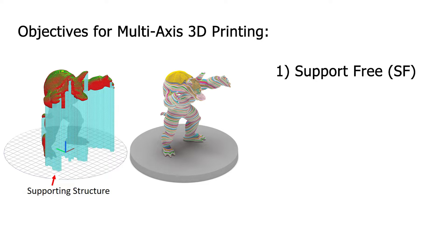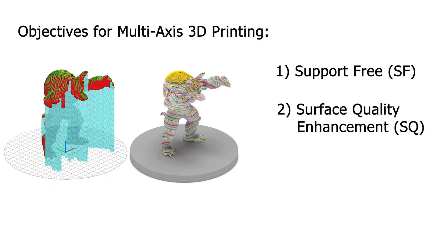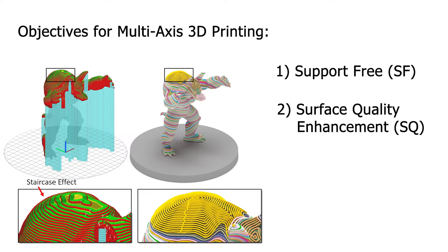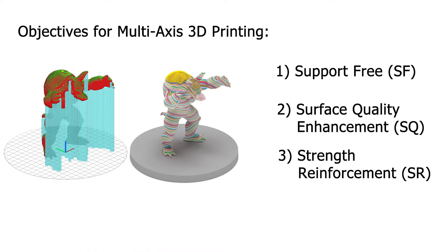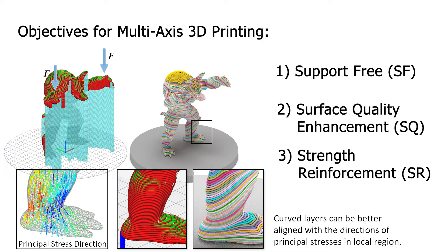Firstly, supporting structures can be avoided when the local printing directions in overhang regions are changed to become support-free. Meanwhile, the surface quality on 3D printed models can be improved by eliminating the staircase effect. The mechanical strength of a model can also be enhanced by making the curved layers better aligned with the directions of principal stresses in critical regions. These three objectives can be optimized together in our framework, and the trade-off can be selected according to the user's preference.